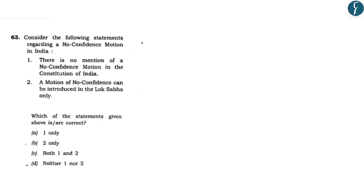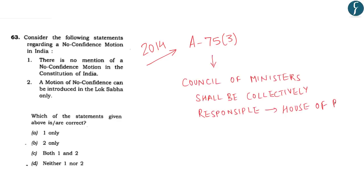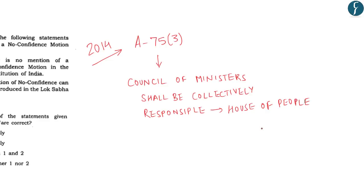A question was asked in the year 2014 regarding no confidence motion. So in this respect, let us first understand Article 75.3 of the Indian Constitution. The article reads: the council of ministers shall be collectively responsible to the house of the people, or Lok Sabha. Thus, the council of ministers remains in office as long as it enjoys the confidence of Lok Sabha.